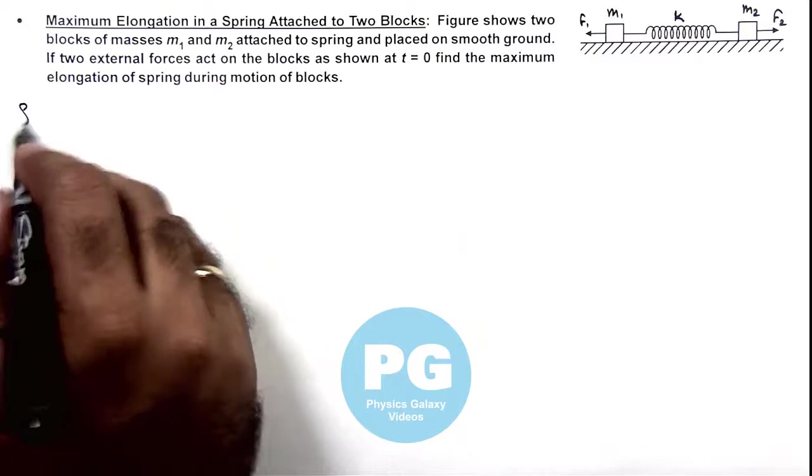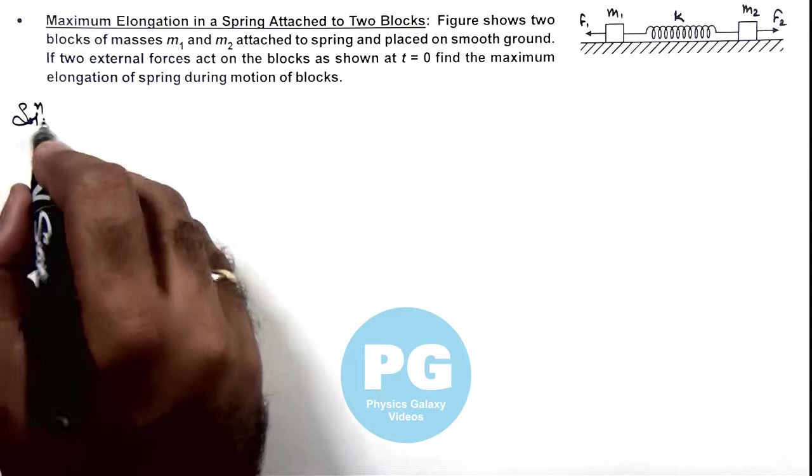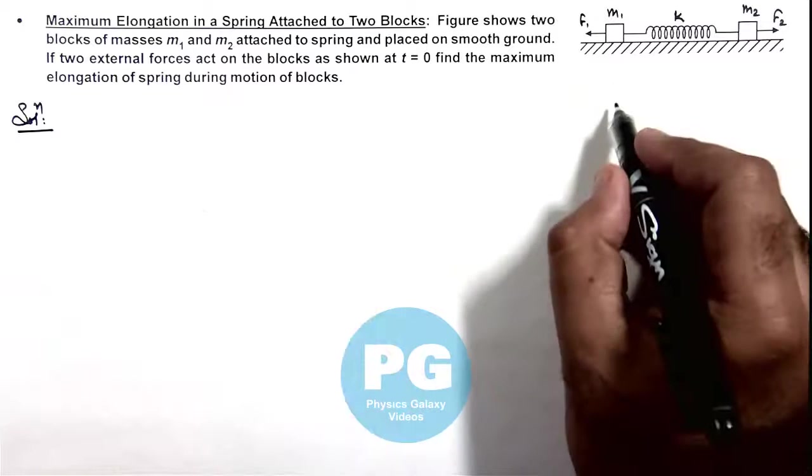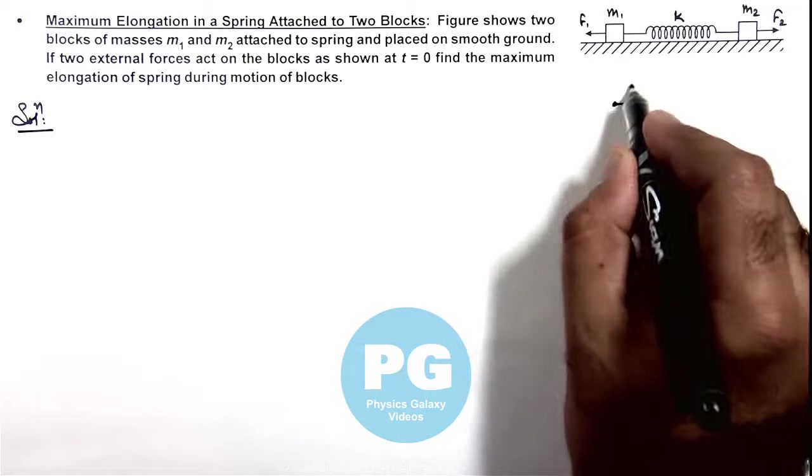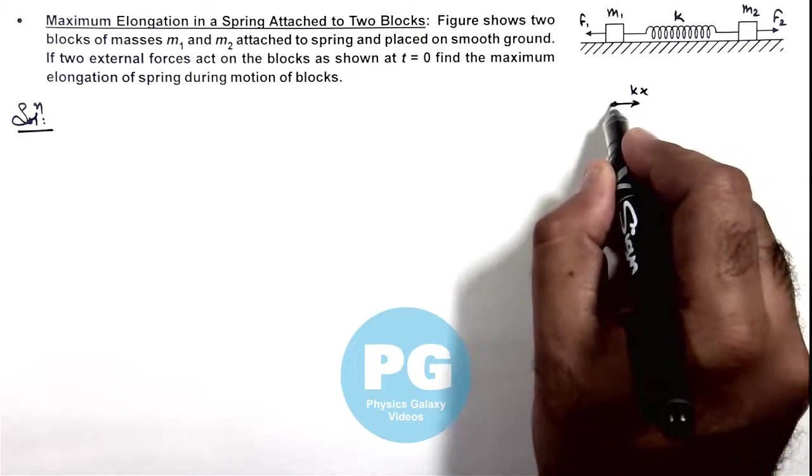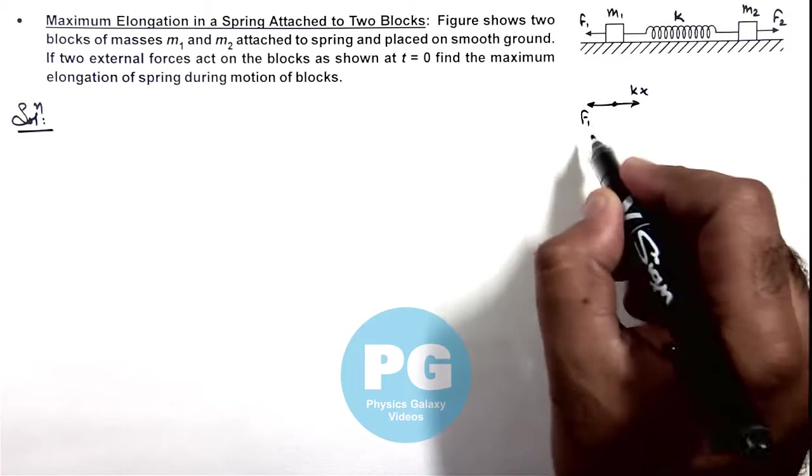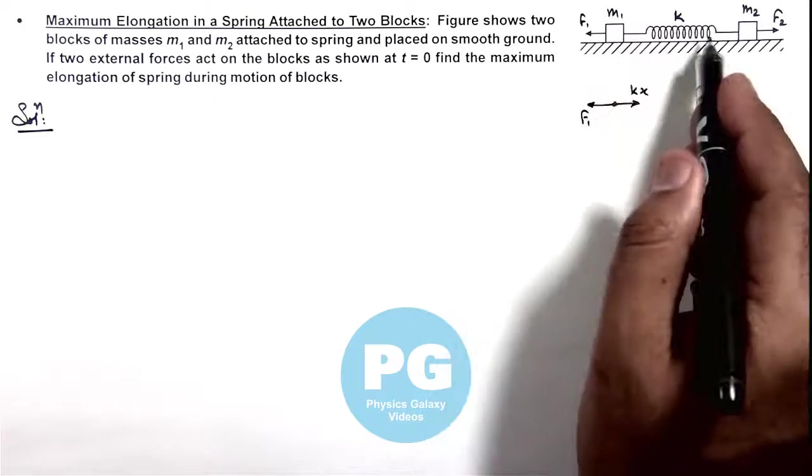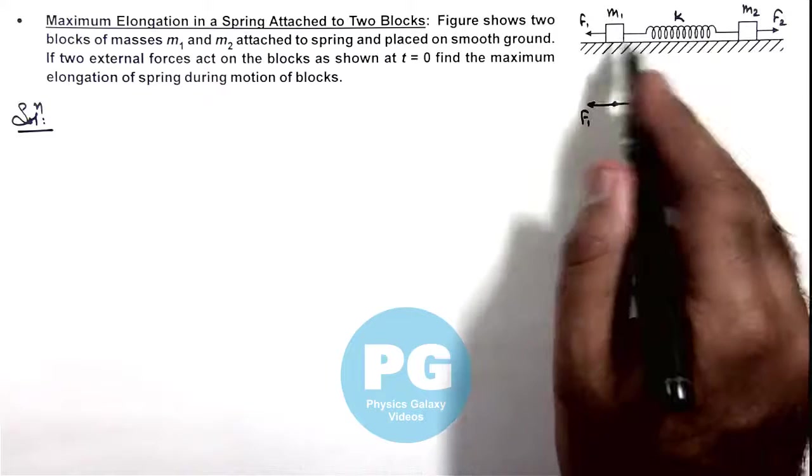Here we can analyze when the blocks will start moving. If we draw the free body diagram of m₁ it'll be experiencing kx toward right and f₁ toward left. Let us assume this block starts moving toward right if f₂ is greater than f₁. So during motion say its acceleration toward right is a₁.